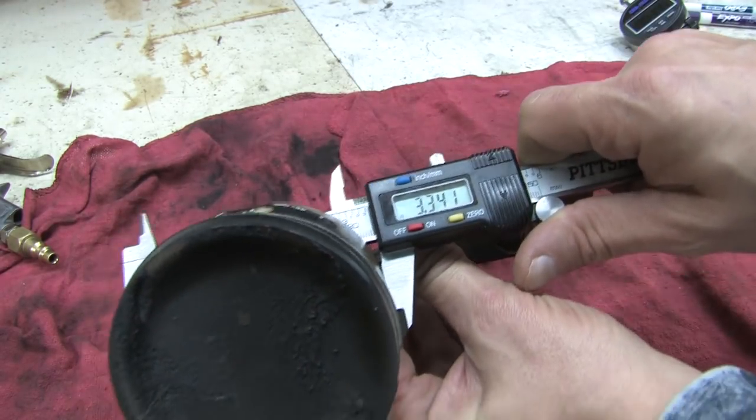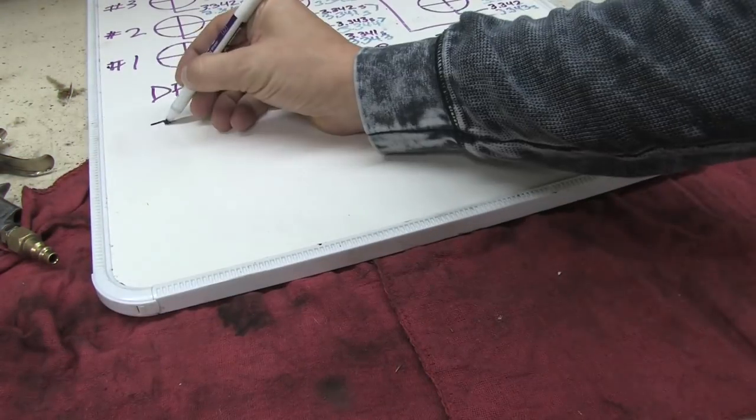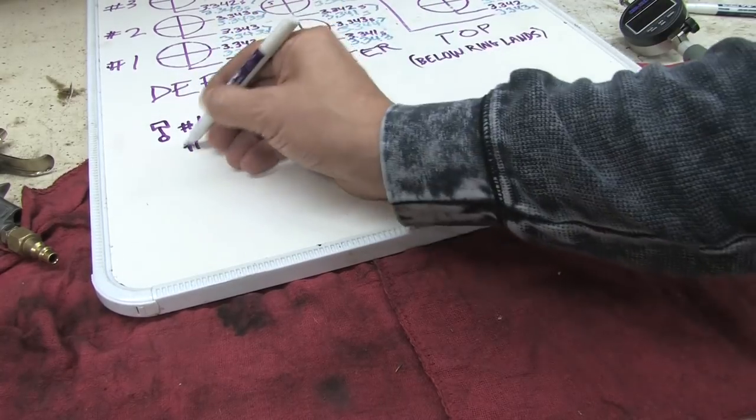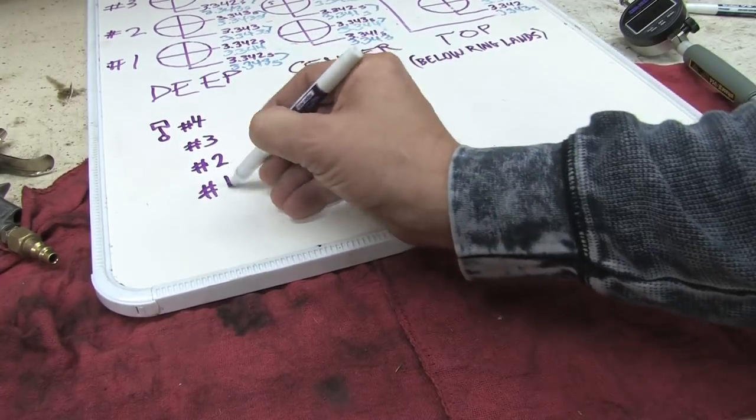We've already done the math for the cylinder bore, so what I'm going to do is write down my piston measurements, one through four, and subtract them from the bore measurements we gathered in the last video.